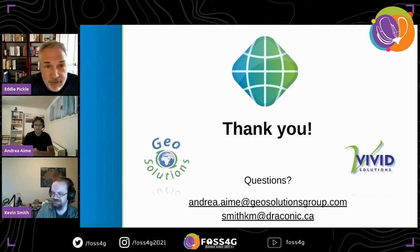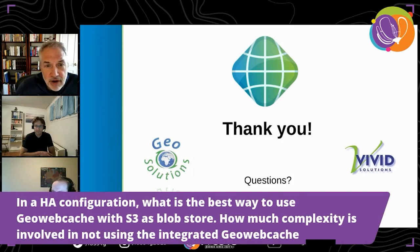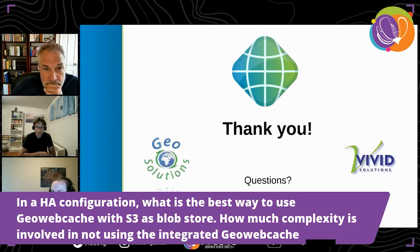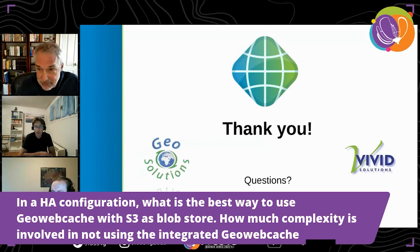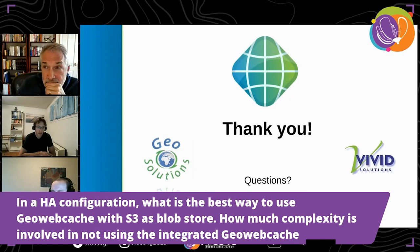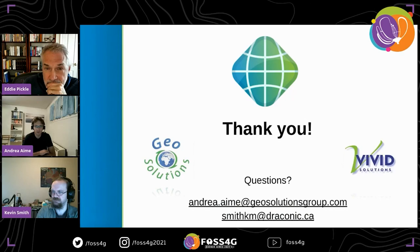We have a few questions. The first: in an HA configuration, what's the best way to use GeoWebCache with S3 as a blob store, and how much complexity is involved in not using the integrated GeoWebCache? Using the S3 blob store in an HA configuration is trivial — you just have all the nodes pointing at the same blob store and S3 handles all the concurrency issues transparently. When it comes to not using the integrated GeoWebCache, you basically have to replicate all the configurations twice — configure the layer in GeoServer, then configure it again in GeoWebCache, perhaps using the REST API, and it would be advisable to automate both via the REST API.